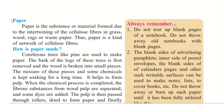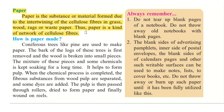We just saw the graphical presentation of how paper is made. Now let us read about it. Paper is the substance or material formed due to the interweaving of cellulose fibres in grass, wood, and rags. Rags are pieces of cloth or waste paper. Thus, paper is a kind of network of cellulose fibre. Cellulose is the material available in plants and trees, and they form a network — that is how paper is made.